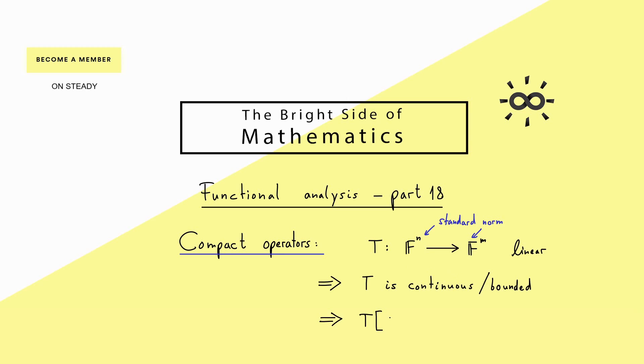Continuous means the same as bounded for linear operators. In other words, the image of the unit ball under T is a bounded set in our finite dimensional normed space F^m. When we form the closure of this set, we get a set that is always compact in F^m.